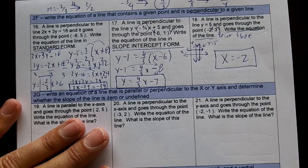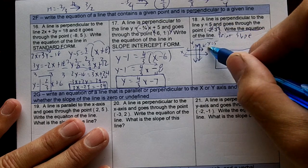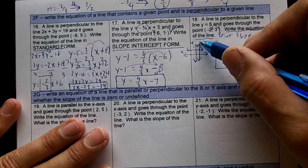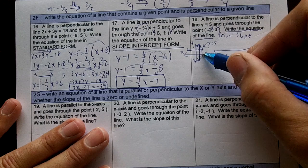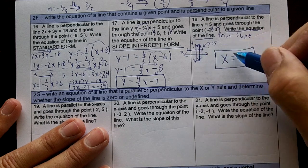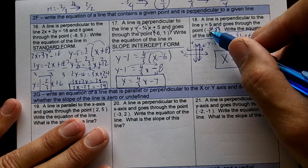Those are kind of tricky. Make sure you draw the line y equal 5, and we want it perpendicular, so it's going to go up and down. If it goes up and down, it'll cross the x axis, it won't cross the y, so the answer will be x equal negative 2.